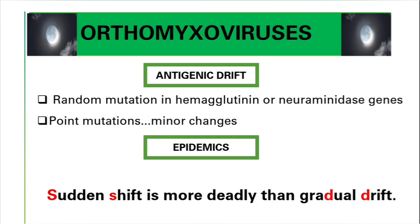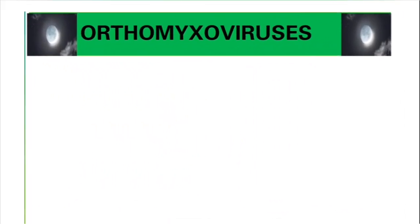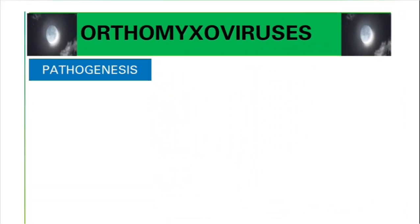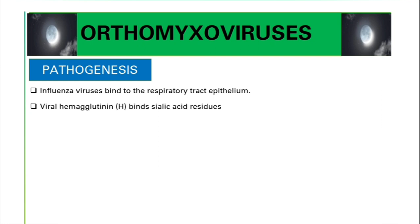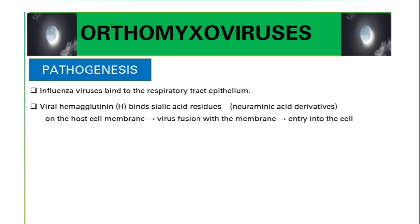Now let's talk about transmission and pathogenesis. Influenza is primarily transmitted through respiratory droplets, specifically via coughing and sneezing. The influenza viruses bind to the respiratory tract epithelium using the viral hemagglutinin, which binds to sialic acid residues — these are neuraminic acid derivatives found on the host cell membrane. This allows fusion of the virus with the cell membrane, leading to entry of the virus into the host cell.